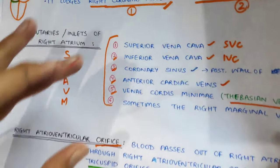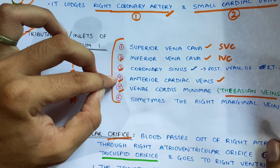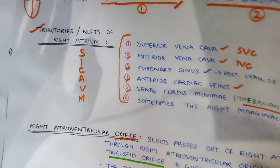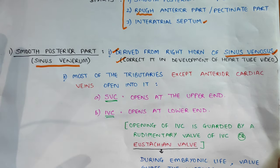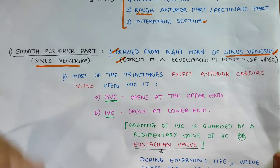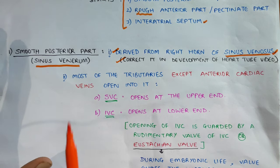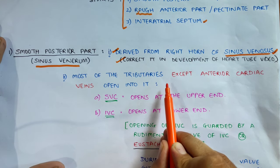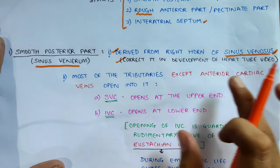So most of the tributaries open into the smooth posterior part, except the anterior cardiac veins. The anterior cardiac veins open into the rough anterior part of the right atrium.